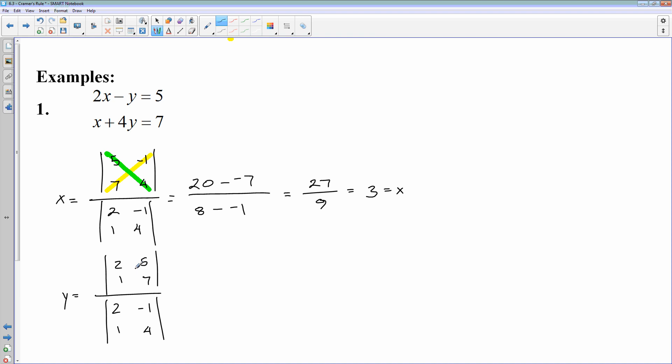Do the same thing for Y. 2 times 7, multiply downhill, minus 1 times 5, multiply uphill, divided by 2 times 4, minus 1 times negative 1. 14 minus 5 is 9. 8 plus 1 is 9. 9 divided by 9 is 1. So there's my value for Y. So we know that the solution for this, these two lines, will intersect at the point 3, 1. And that's using Cramer's rule.